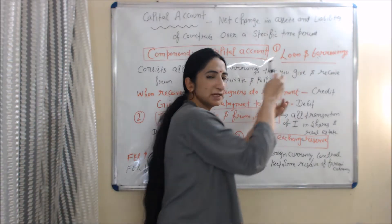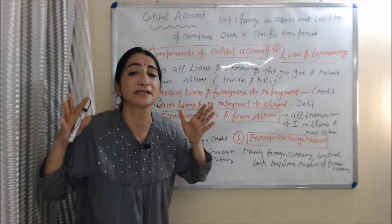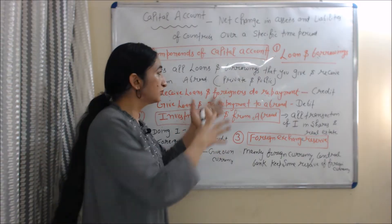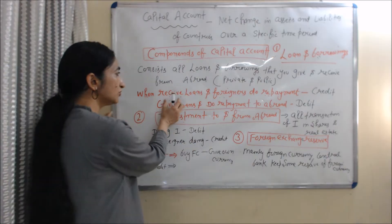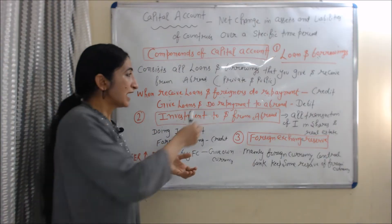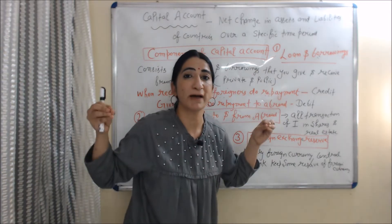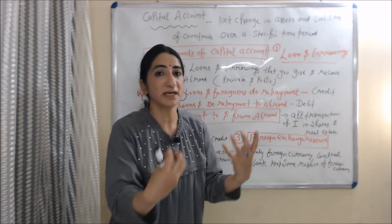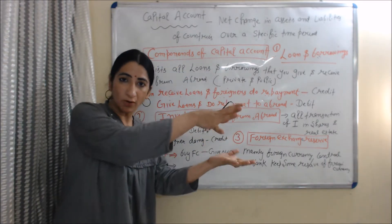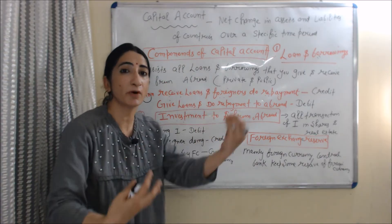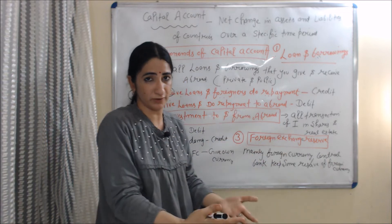Firstly, we talk about loans and borrowings. Loans and borrowings include all loans and borrowings that you give and receive from abroad, including both public sector as well as private sector loans. When you receive loans from abroad, or foreigners do repayment of your loan, it will come on the credit side of the balance of payment account because money is coming into your country. On the other hand, if you give loans to abroad or do repayment of your loans abroad, it will come on the debit side because money is going from your country.